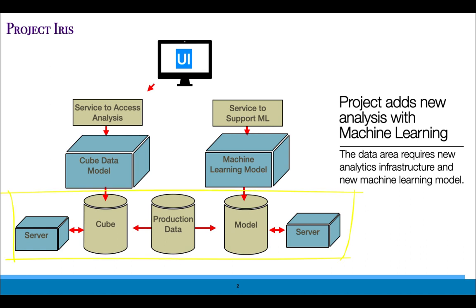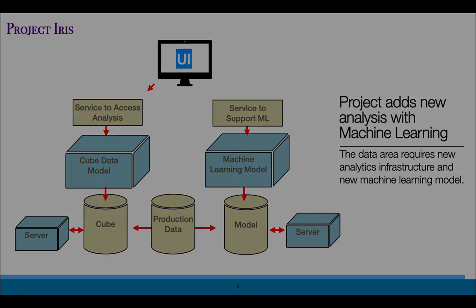The next component is infrastructure. The DataCube and the machine learning components can demand a lot of infrastructure. If the infrastructure is demanding, we'll need a separate effort to procure, set up, and configure that infrastructure. And finally, we'll need production data. That production data will need to be available to the analysis team as well as the machine learning team.